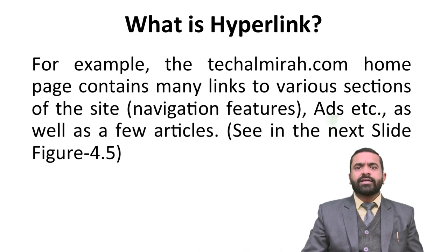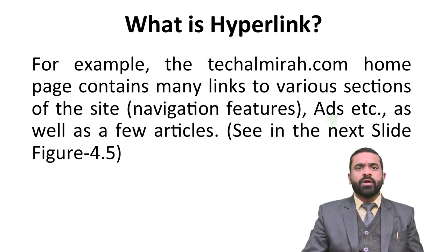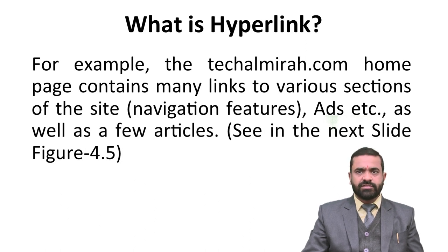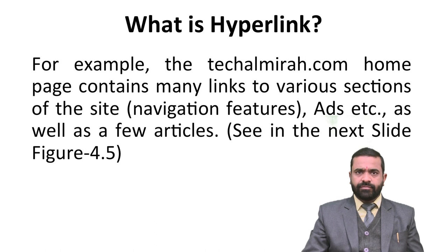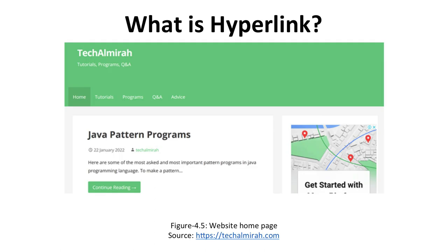For example, techalmira.com — the homepage contains many links to various sections of the site, including navigation features, ads, and articles. Here we can see techalmira with hyperlinks such as 'Java pattern programs.' The website homepage is techalmira.com.